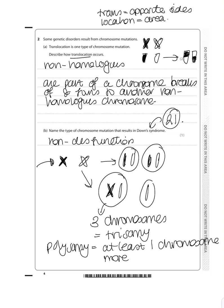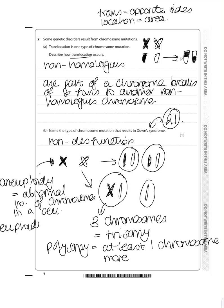And other terms like aneuploidy just refers to saying it's an abnormal number of chromosomes in a cell. It doesn't say by how much. And this is because euploidy means the normal number of chromosomes in a cell.